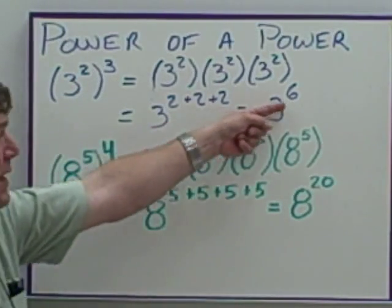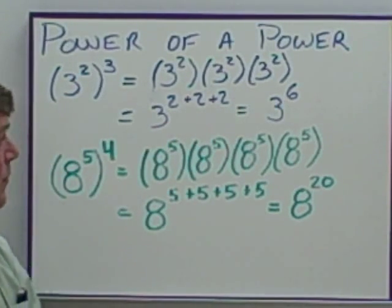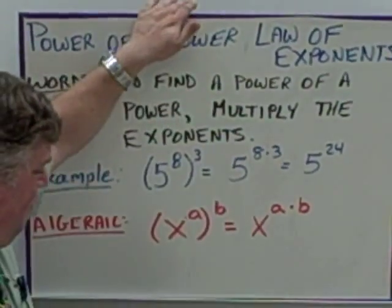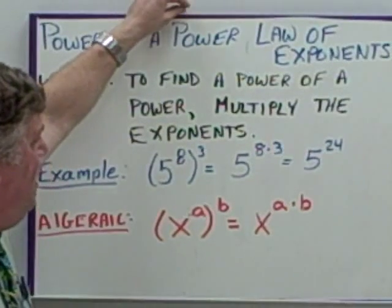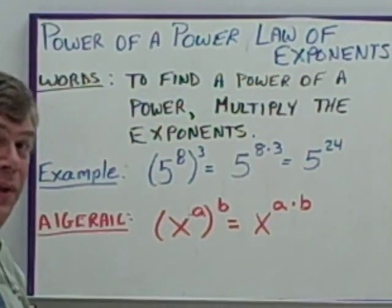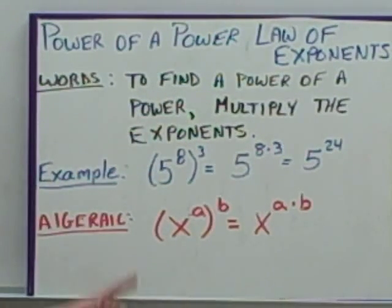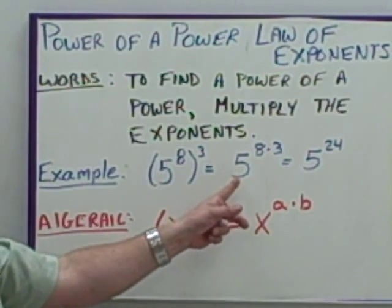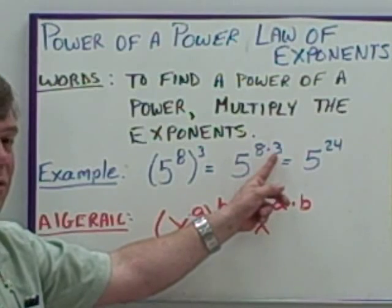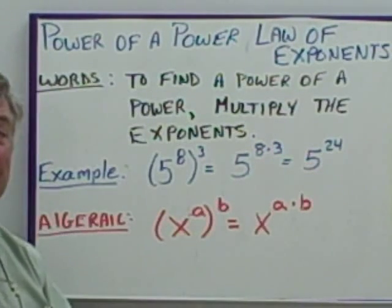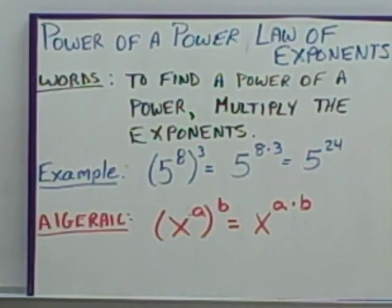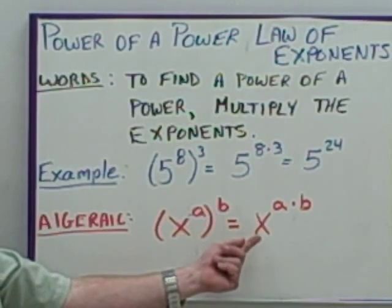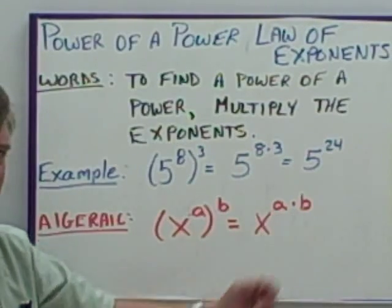2 times 3 gives me 6. So we've come up with another law of exponents, which says to find a power of a power, multiply the exponents. So when you have 5 to the 8th to the 3rd power, that becomes 5 to the 8 times 3, which becomes 5 to the 24th power. Algebraically, this is written as x to the a to the b equals x to the a times b.